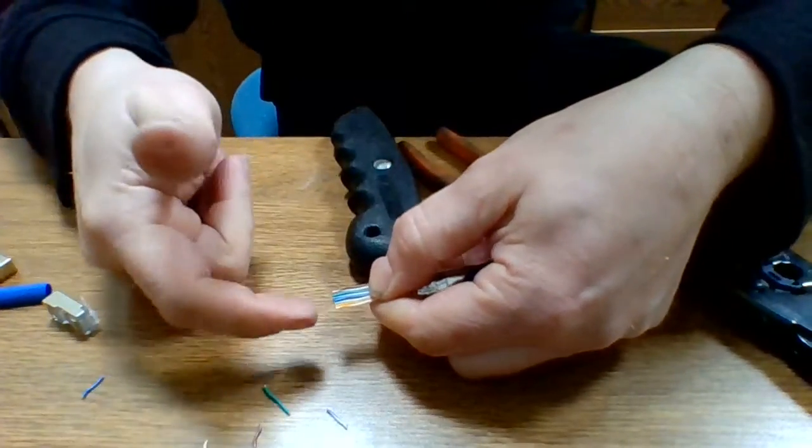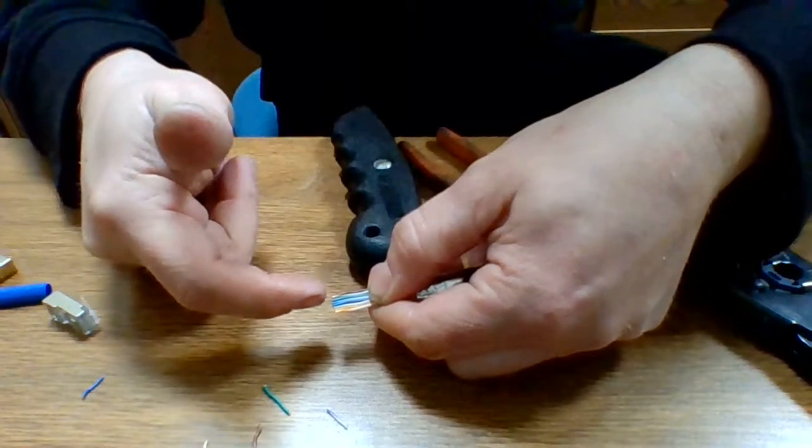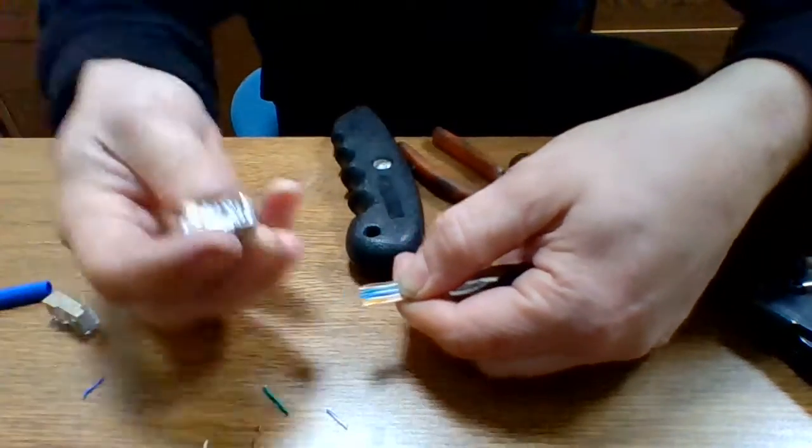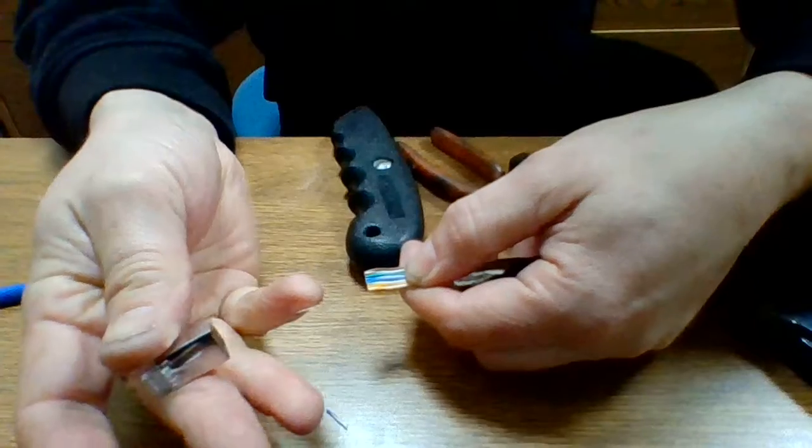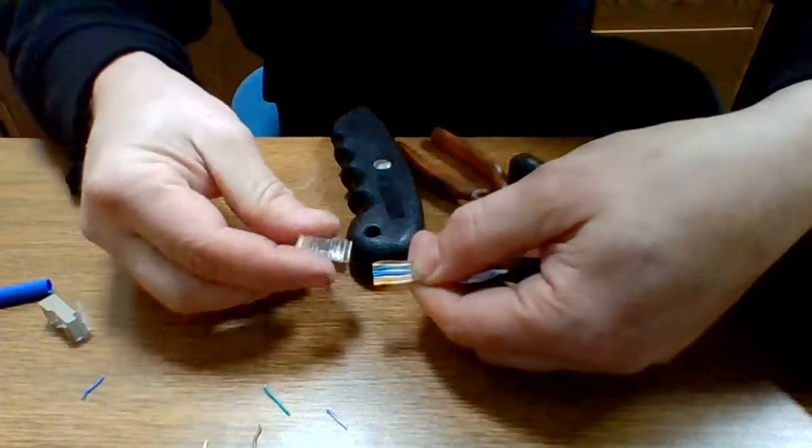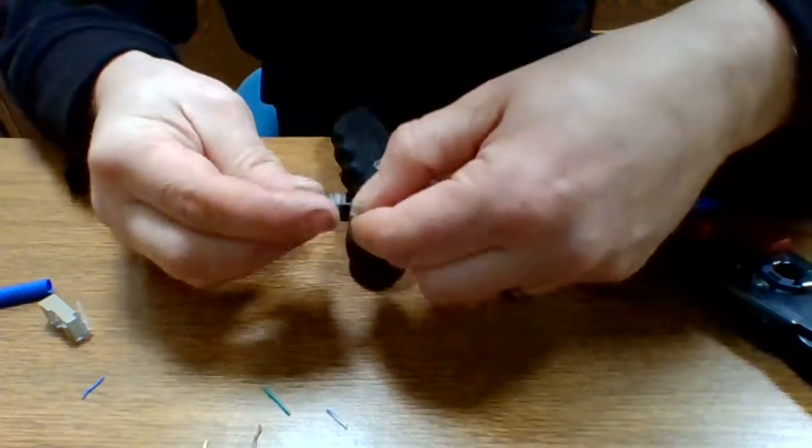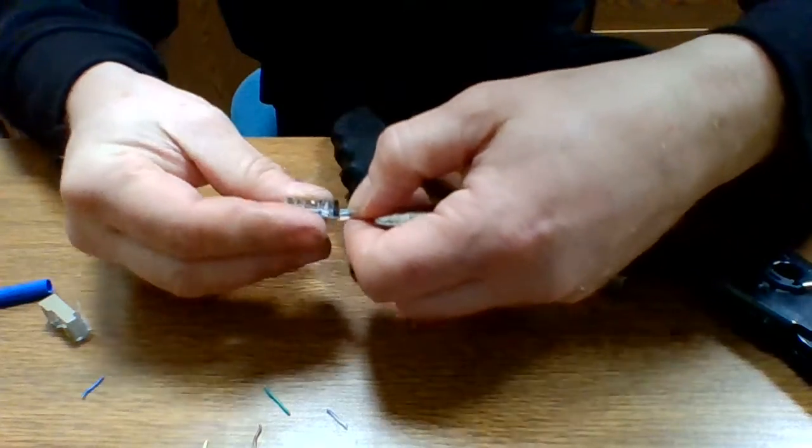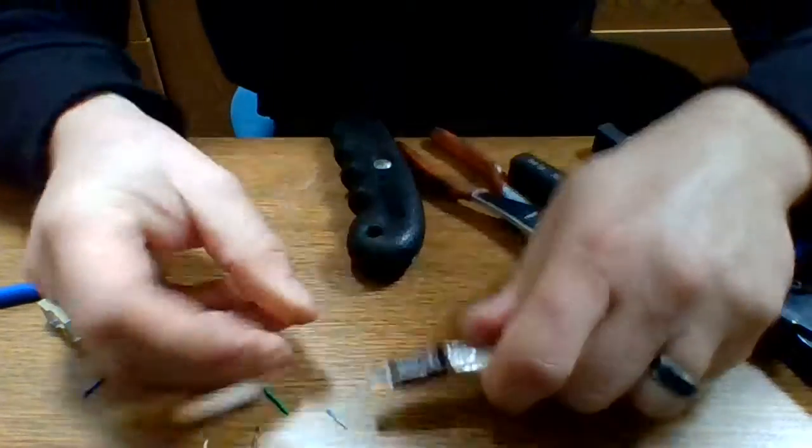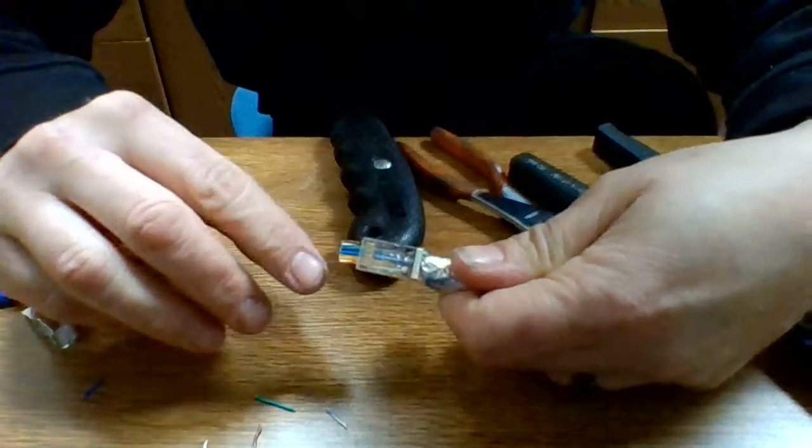Alright, so I got my stripe orange, orange, stripe green, blue, stripe blue, green, stripe brown, brown. Put the tang down like so and then wiggle them through and then double check it on the output.